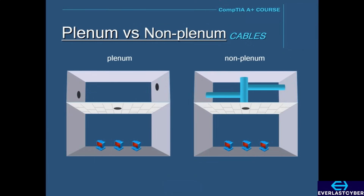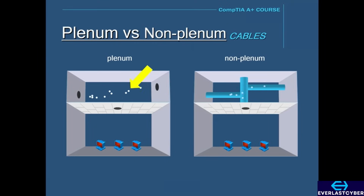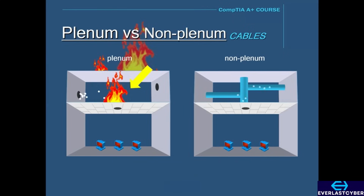The term plenum refers to a space in a building where there is open air flow circulation, usually between the drop ceiling and the structure ceiling. Buildings that don't have plenum spaces have air ducts encapsulating the air flow. Buildings that have plenum spaces with adequate open air flow are more prone to fires, and because of this, cables that run through plenum spaces must meet certain requirements.